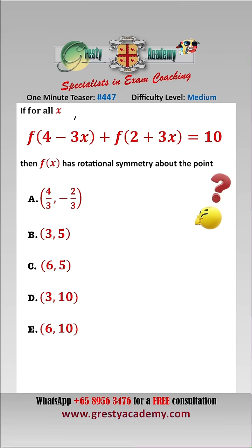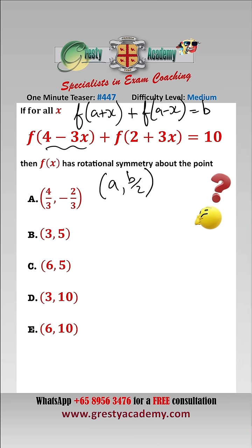To solve this, we want to transform the functional equation into the form f of a plus x plus f of a minus x equals b for some constants a and b, which from previous teasers we know means that the rotational symmetry point is a, b over 2. So let's let